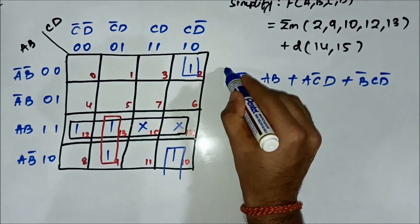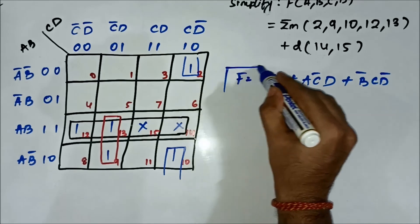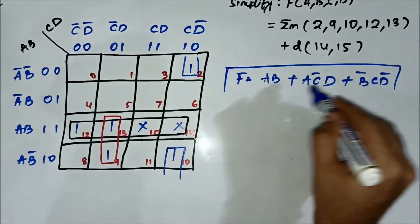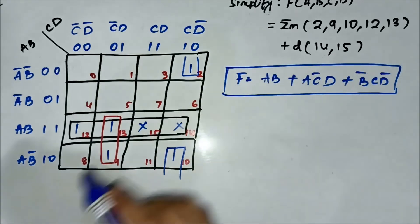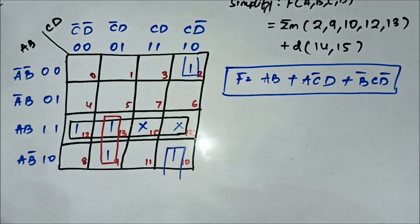So the simplified boolean expression is AB + AC̄D + B̄CD̄.